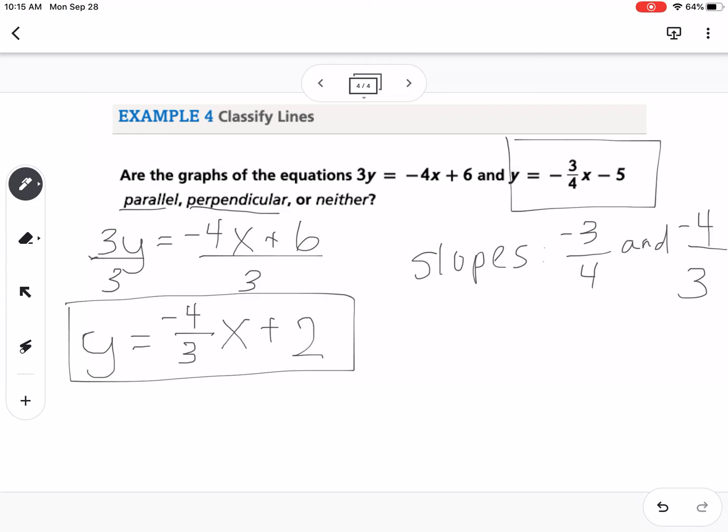So one should be positive and one should be negative, and then they are flipped. So they're flipped, they have the reciprocal part, but they're both negative, so that means they can't be perpendicular. So our answer would be they are neither, neither parallel nor perpendicular. Let me know if you have any questions.